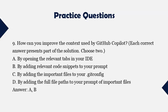Question 9: How can you improve the context used by GitHub Copilot? Each correct answer presents part of the solution. Choose two. A. By opening the relevant tabs in your IDE. B. By adding relevant code snippets to your prompt. C. By adding the important files to your GitHub config. D. By adding the full file paths to your prompt of important files. Answer: A and B.